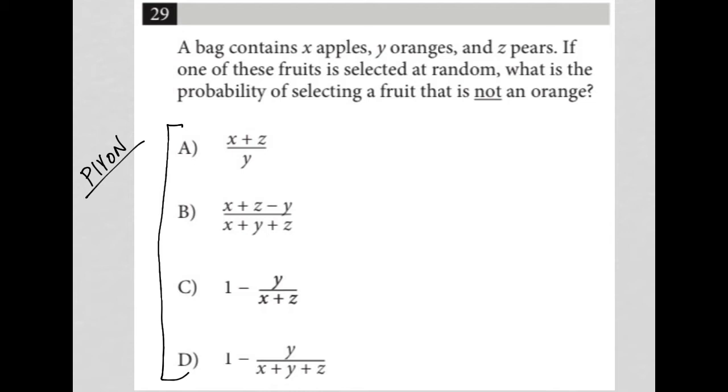Okay, so first of all, whenever I see this word probability, probability on this test represents what I want in the numerator over what I have in the denominator. Now, what do I have? I have apples, oranges, and pears, which means I have X plus Y plus Z, right? That's what I have.